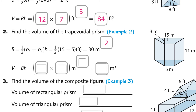Then we take that 30 and multiply it by the height of the prism. The height of the prism is this 11. So that's 30 times 11; now it's in cubic units. And 30 times 11 is 330 — that's the volume of the trapezoidal prism.